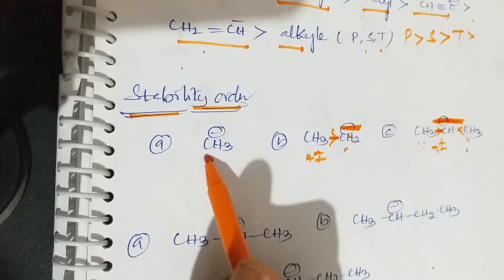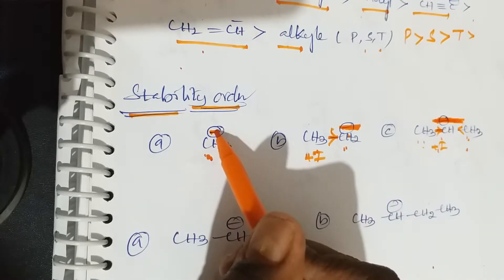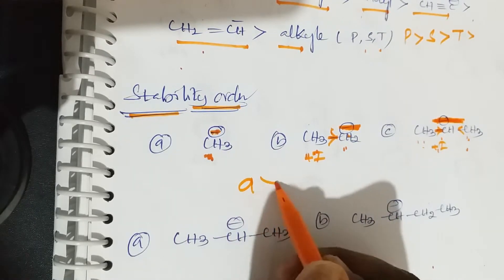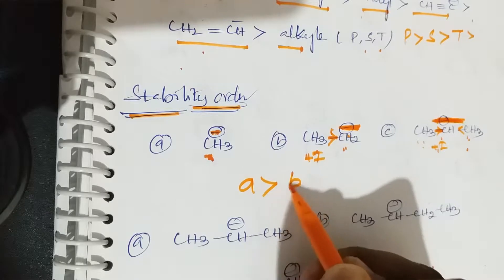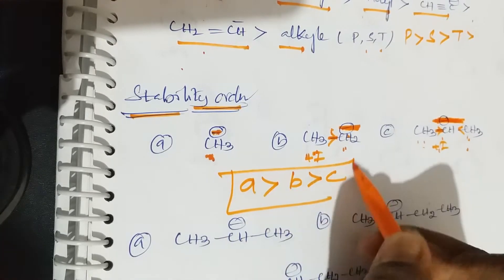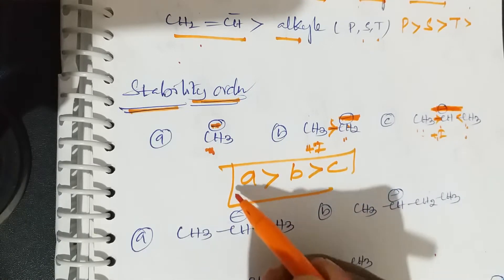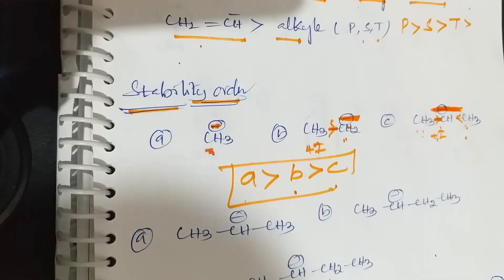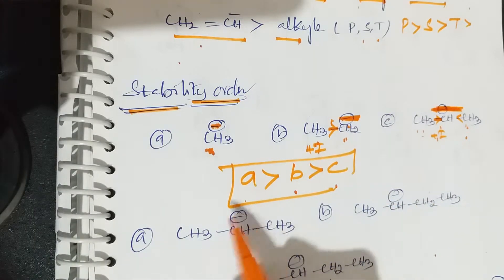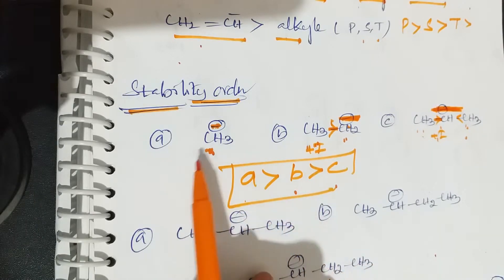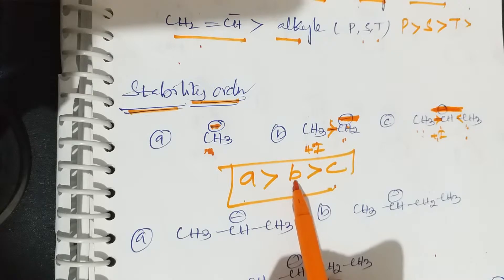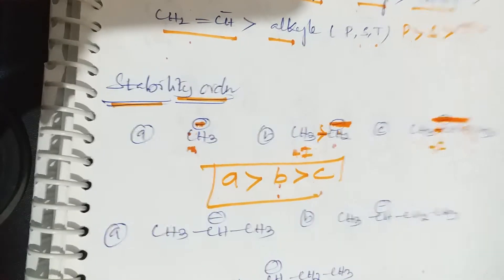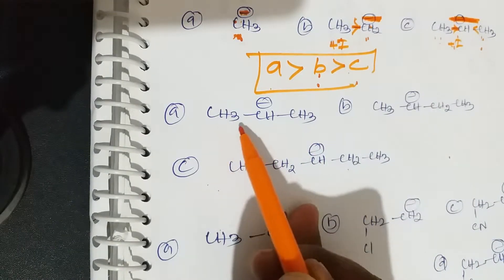Out of these three, which one has the least negative charge? The methyl carbanion (A) has the least negative charge, so it is the most stable. Therefore the stability order is A > B > C. The statement: negative charge should be less on carbon — that compound is more stable. A is more stable than B, B is more stable than C, due to less negative charge on carbon.